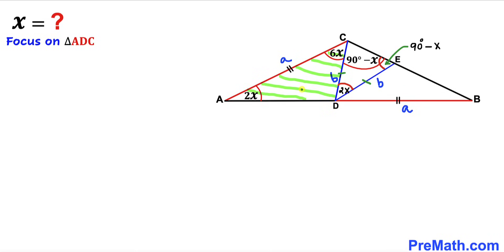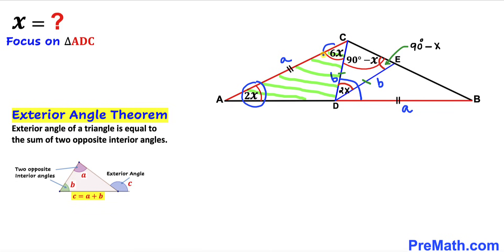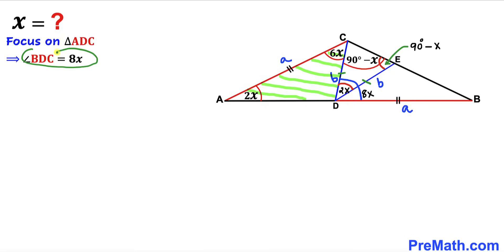Let's focus on triangle ADC and recall the exterior angle theorem: an exterior angle of a triangle equals the sum of the two opposite interior angles. Here, angle BDC is the exterior angle, equal to the sum of opposite interior angles 2x and 6x. So the exterior angle BDC turns out to be 8x.